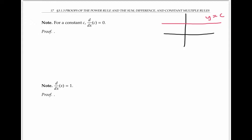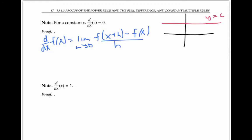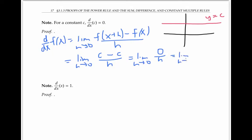But we can also prove this fact using the limit definition of derivative. The derivative of any function is the limit as h goes to zero of f(x+h) minus f(x), divided by h. Here our function is just a constant, so we're taking the limit as h goes to zero of the constant minus the constant divided by h, which is just the limit as h goes to zero of zero over h, which is just the limit of zero, which is zero.